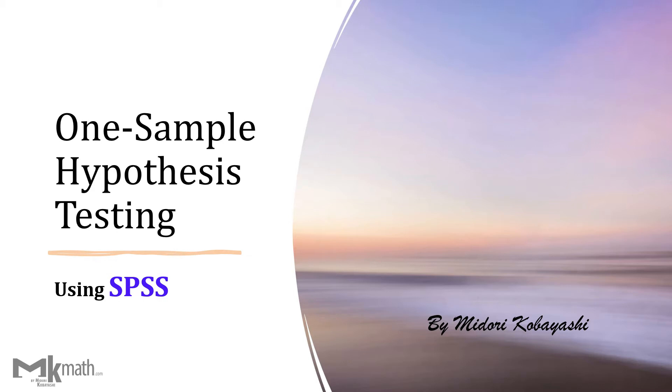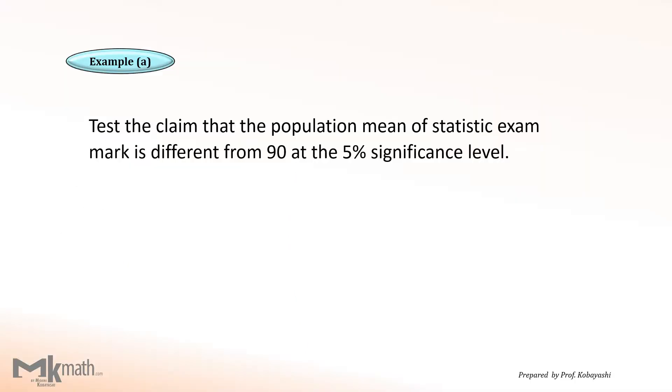Hello, everyone. In this video, I'd like to show how to perform one-sample hypothesis testing using SPSS with p-value approach. Please just assume this is an example question. The keywords of different indicate two-tailed tests. The null and alternative statement should be like this.